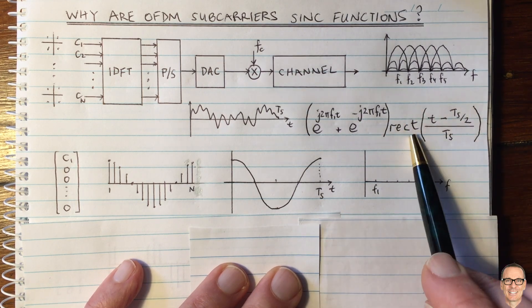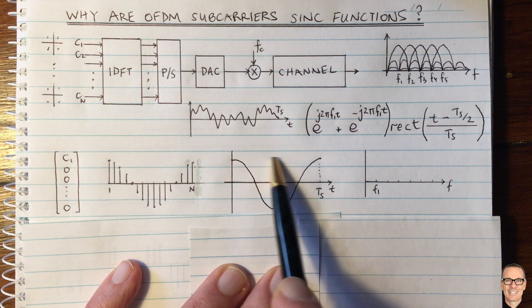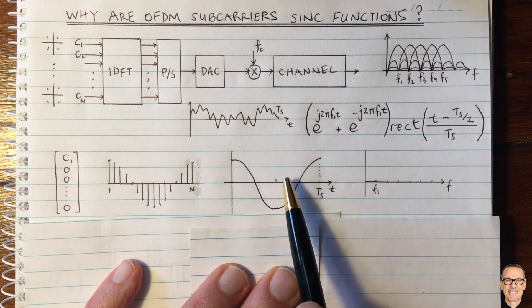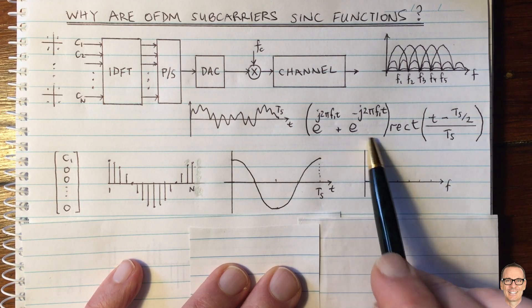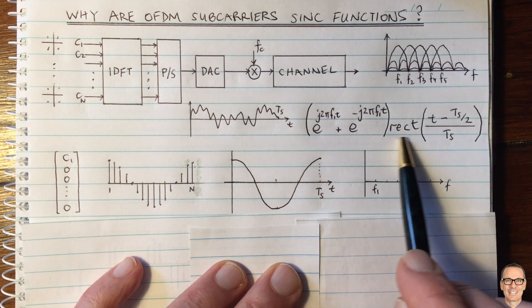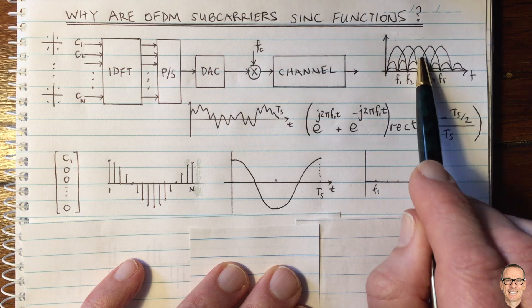So this rectangular function here is zero for negative time. It equals one until Ts and zero afterwards. When you multiply that by a cosine waveform, which goes for all time, you'll end up with this function here. And it's this rect function, which gives us these sinc functions here. Why is that?